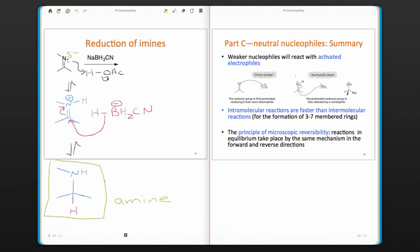So in summary for Part C, weaker nucleophiles will react with activated electrophiles. We saw that intramolecular reactions are faster than intermolecular reactions for the formation of 3-7 membered rings. And we saw the principle of microscopic reversibility, that reactions in equilibrium take place by the same mechanism in the forward and reverse directions.